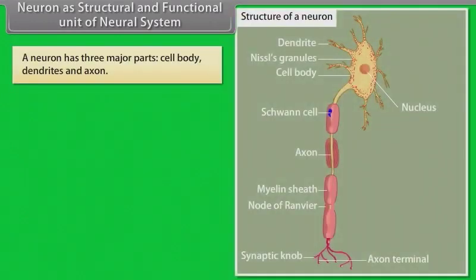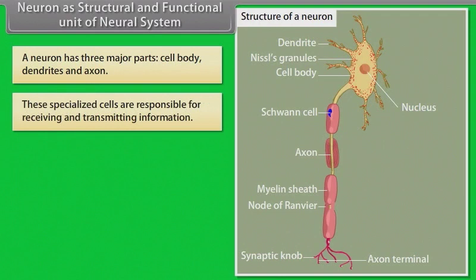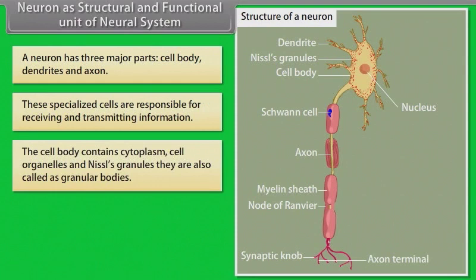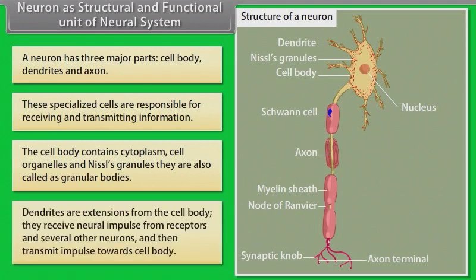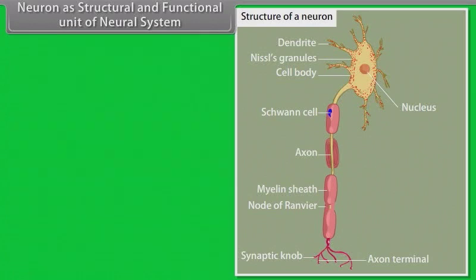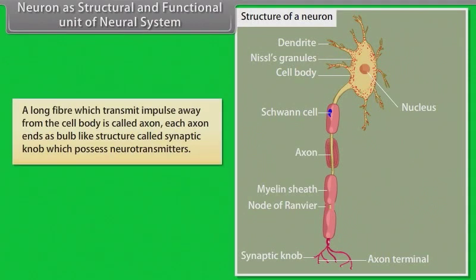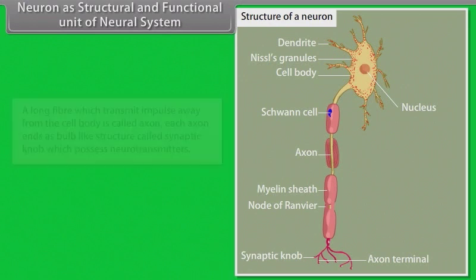A neuron has three major parts: cell body, dendrites, and axon. These specialized cells are responsible for receiving and transmitting information. The cell body contains cytoplasm, cell organelles, and Nissl's granules, also called granular bodies. Dendrites are extensions from the cell body that receive neural impulses from receptors and other neurons and transmit them towards the cell body. A long fiber called axon transmits impulses away from the cell body, ending in a synaptic knob which contains neurotransmitters.